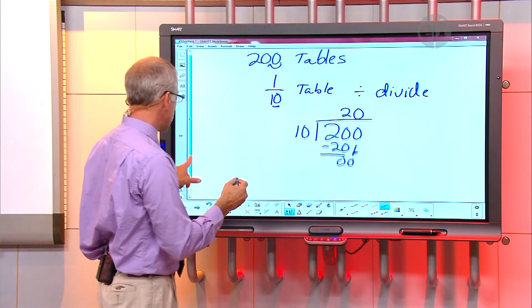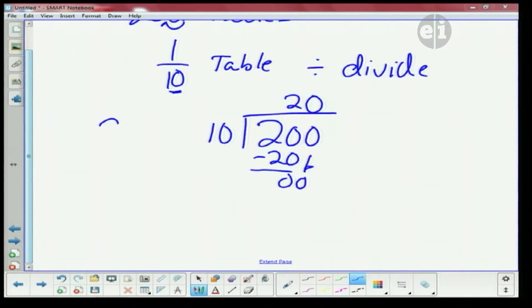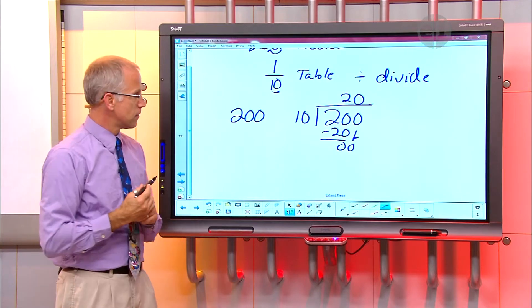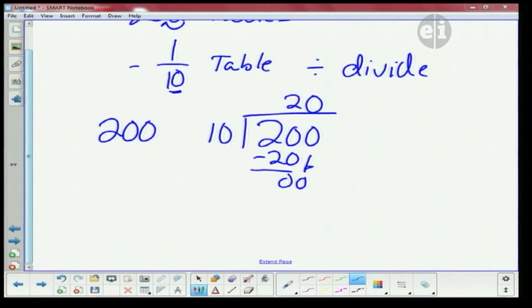Now, another way we can do this is, if I multiply two hundred, what is one-tenth as a decimal? One-tenth as a decimal? Yes. Um, I'm not sure. Well, it's gonna be one divided by ten, which is gonna be point one. Okay? Okay.